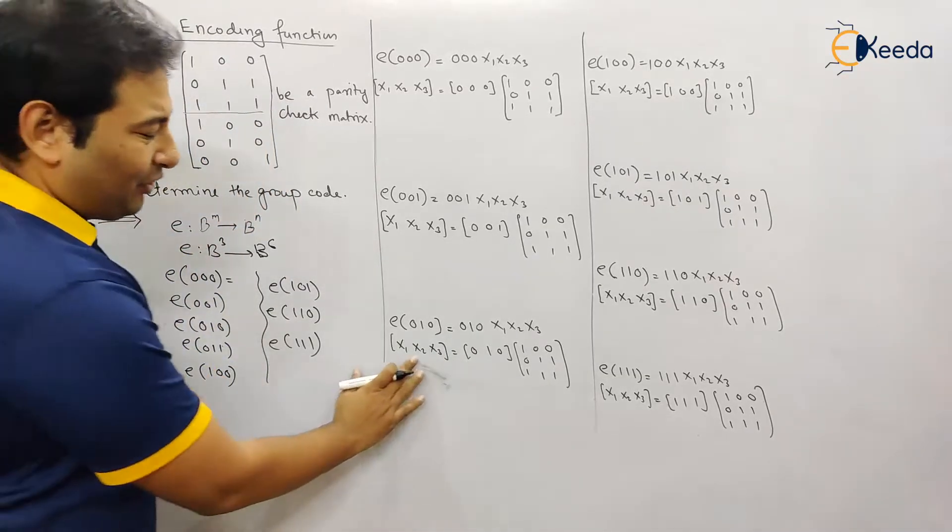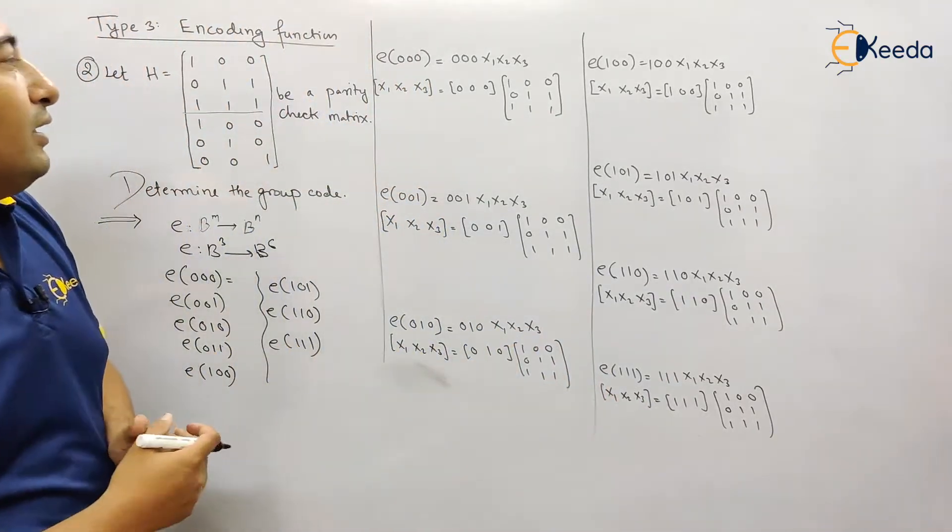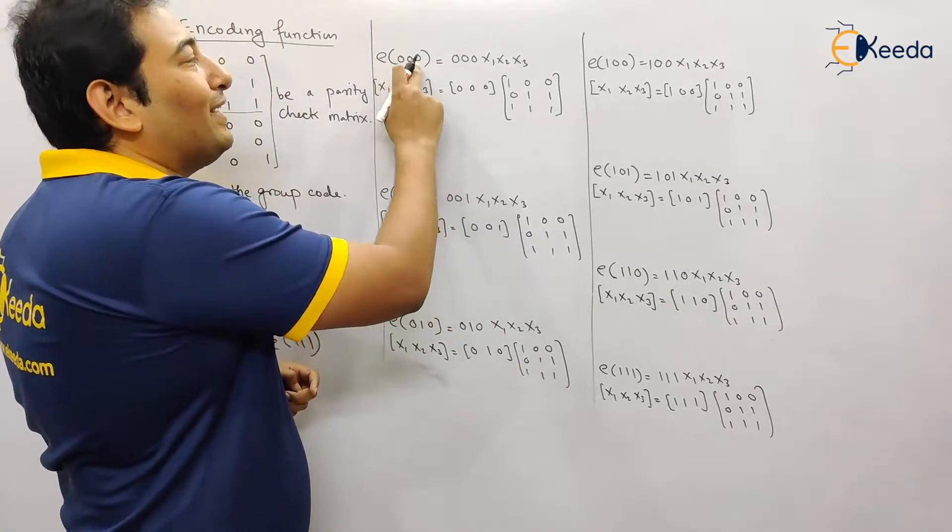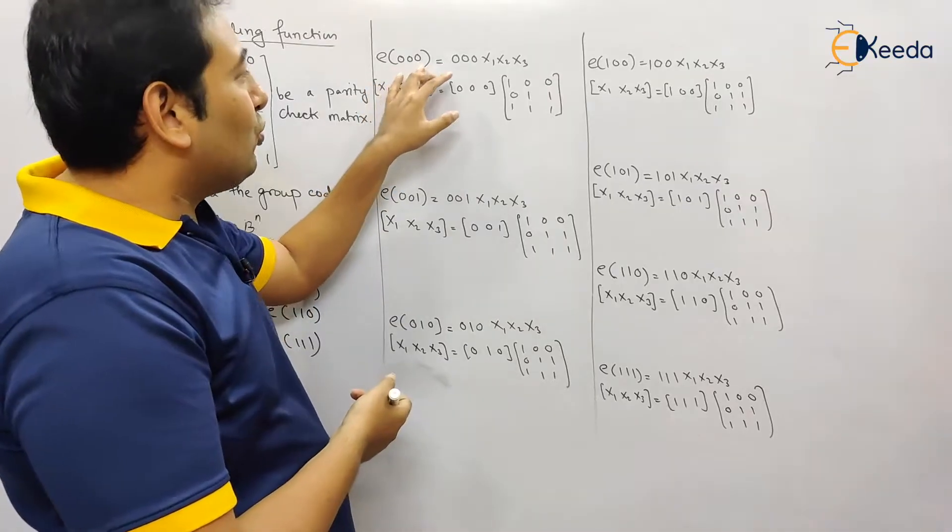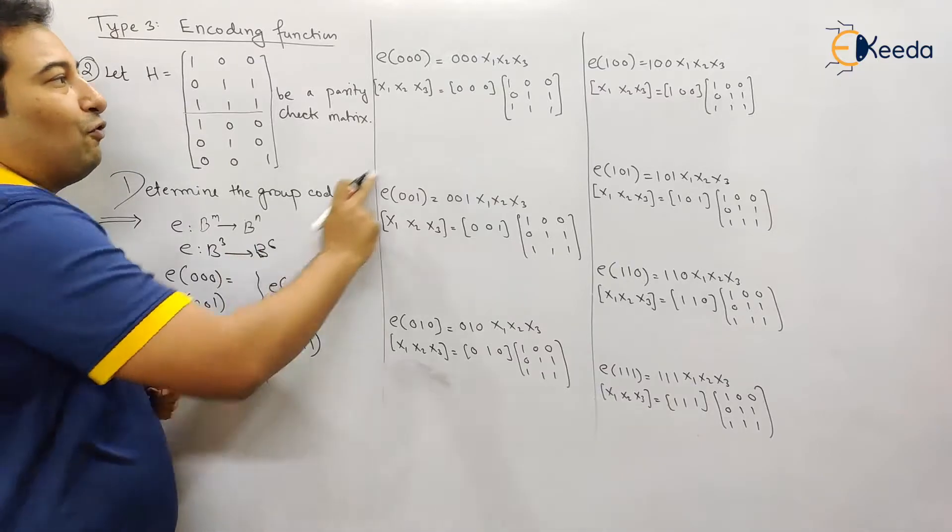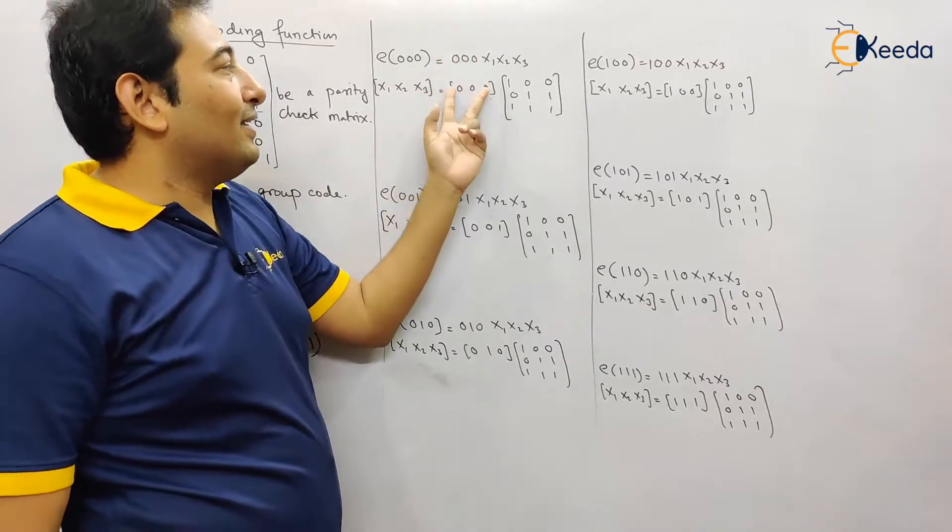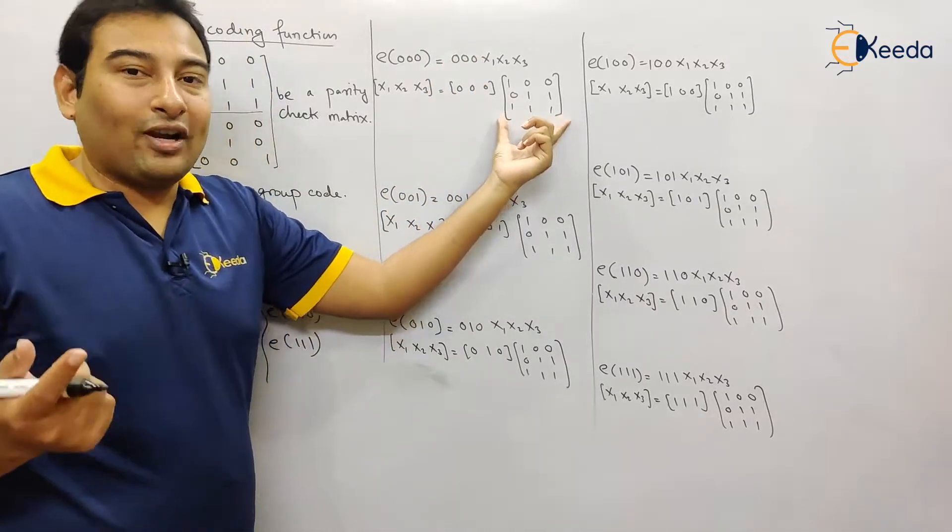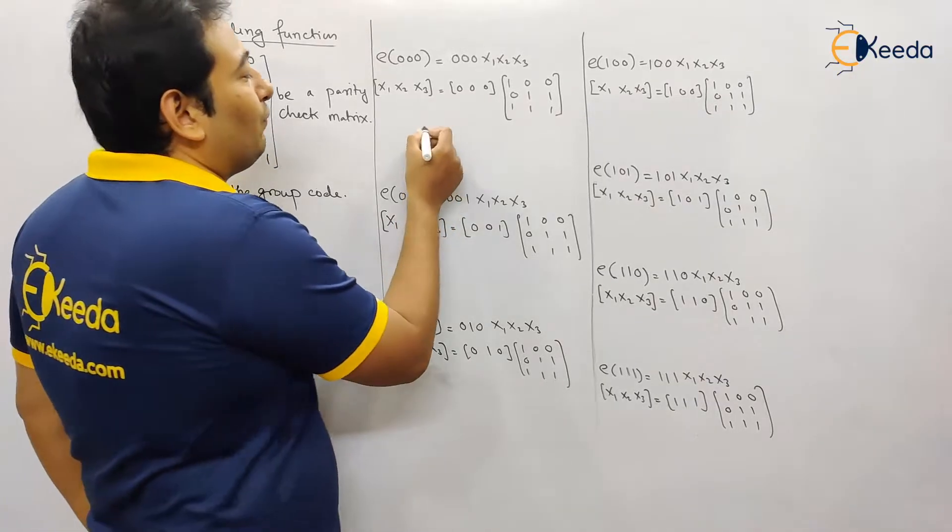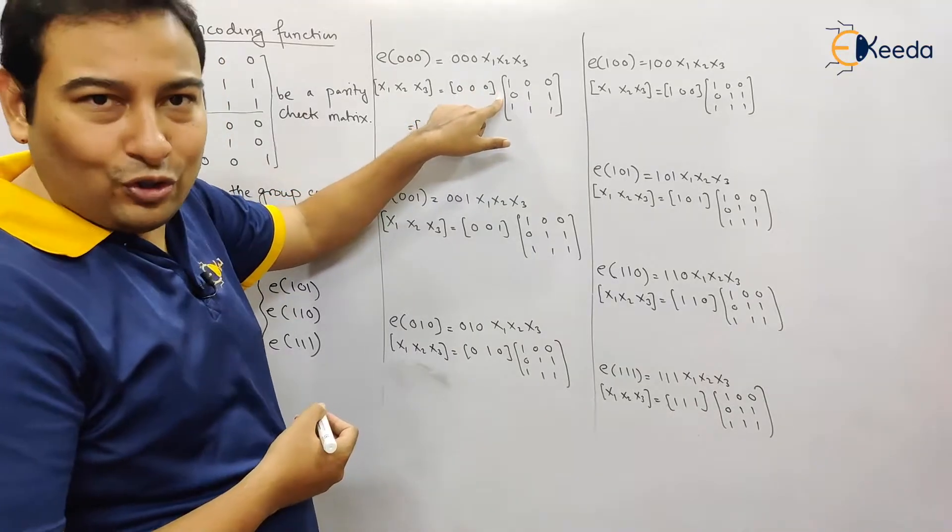So I think that you can manage by yourself. Let's start. I don't have space to write, so therefore I'm leaving it on you. Let us start. First, we need to find out the code for e 0 0 0. So e 0 0 0 is what: 0 0 0 on right hand side. Since the length is 6, therefore there will be three unknowns x1 x2 x3. So x1 x2 x3 is what: triple 0 along with the non-identity matrix, so that is 1 0 0, 0 1 1, and triple 1.